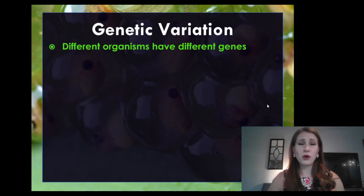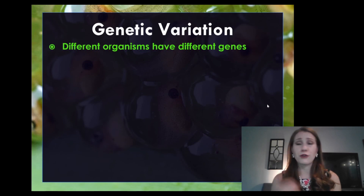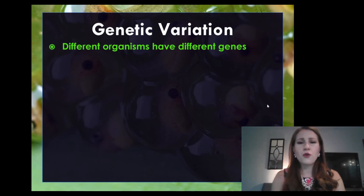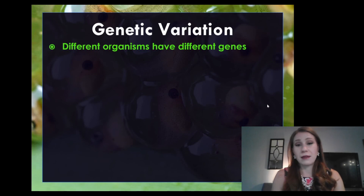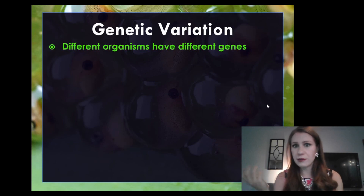You don't look identical to every other member of your family. You have some small differences — you may have different hair color, different eye color, different features, like a hitchhiker's thumb or not. So you have different genes than the people around you, and we can also assume that different organisms have different genes. We don't have the same genes as a bunny rabbit or even a banana.